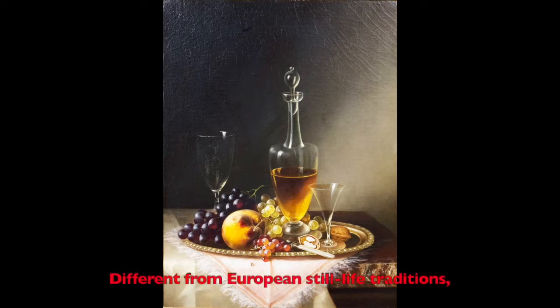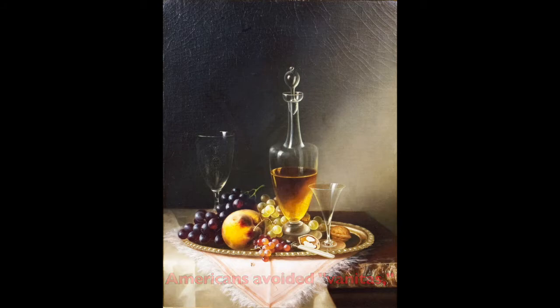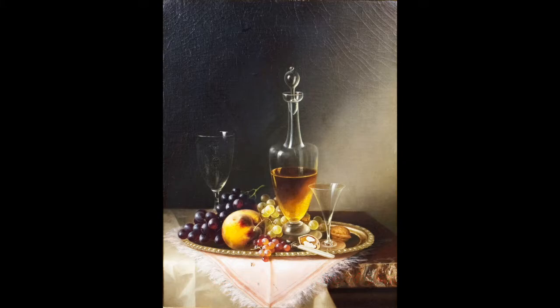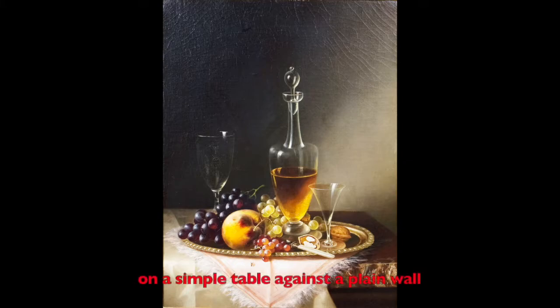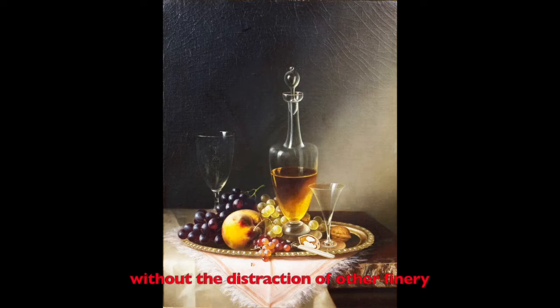Different from European still life traditions, Americans avoided vanitas, which are references to death or the transitory nature of time. Rien's isolation of objects on a simple table against a plain wall highlights their form and texture without the distraction of other fineries such as patterned textiles.